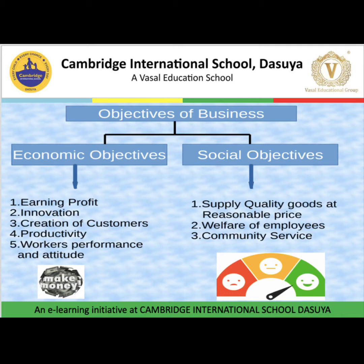Under economic objectives, the objectives that come here are: earning profit, innovation, creation of customers, productivity, and workers' performance and attitude. Under social objectives, the objectives include supply of quality goods at reasonable price, welfare of employees, and community service.